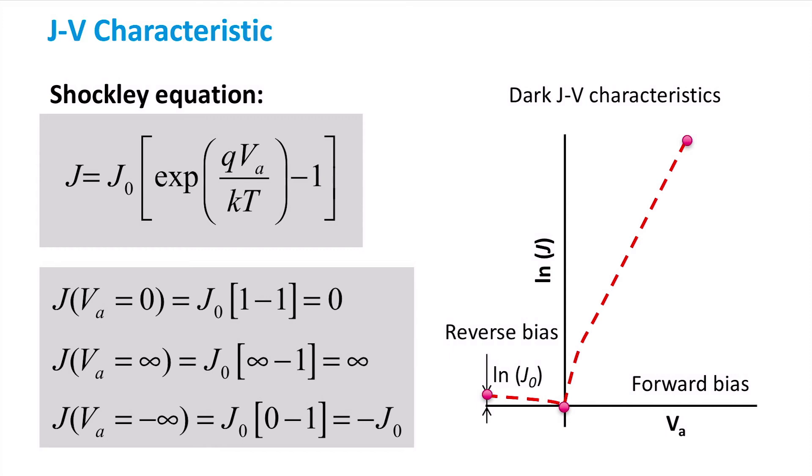It should be noted here that this is only the case for an ideal diode. In reality, there is usually a negative breakdown voltage where the diode will start to conduct large amounts of current in the reverse direction. However, solar cells do not typically operate in this regime, so we can ignore that part of the JV characteristic.